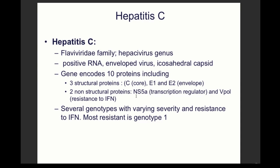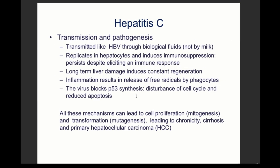Hepatitis C is a positive-sense RNA virus of the Flaviviridae family, also enveloped. Its genome encodes 10 proteins including core protein, E1 and E2, and non-structural proteins. Genotype 1 is the most resistant to interferon. Transmission is similar to hepatitis B, except it is not transmitted through breast milk. It replicates in the liver and induces immunosuppression.